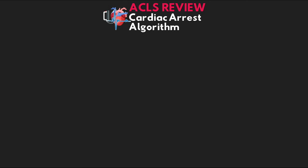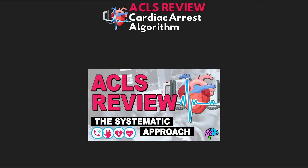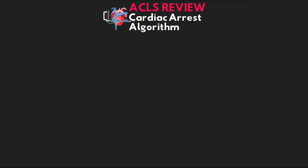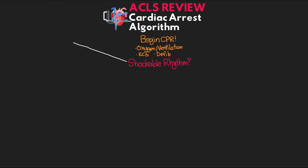From our systematic approach — which I discussed in depth in the previous lesson in this series, linked above — the first thing you want to do is call for help, activate your emergency response alert or call a code, and immediately begin CPR. Make sure you're providing oxygen and ventilatory support for your patient, as this is often neglected initially. Get your ECG monitor on and attach the defibrillator. As soon as the defibrillator is attached, immediately assess the patient's rhythm for whether or not it's shockable, which leads to two branches of this algorithm.